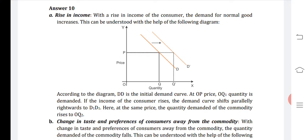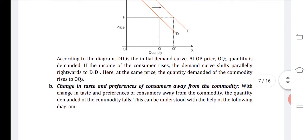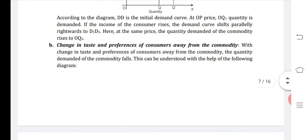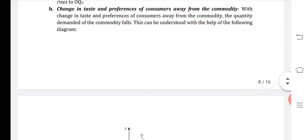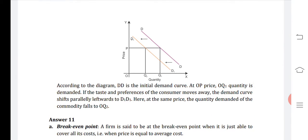Second case: change in taste and preference of the consumer away from the commodity. With this change, the quantity demanded of the commodity falls. According to the diagram, DD is the initial demand curve. At OP price, OQ1 quantity is demanded. If the taste and preference of the consumer moves away, the demand curve shifts parallelly leftwards to D1D1, shown by dotted lines. At the same price, the quantity demanded falls to OQ2.